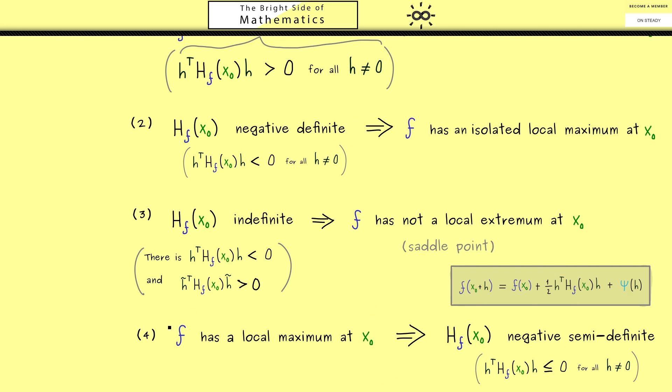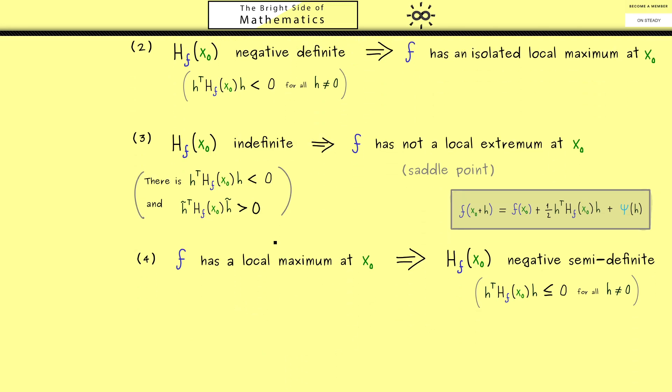And now the last implication here is the same thing for a local minimum. And there we will get a Hessian matrix that is positive semi-definite. So it has the same meaning as before; we simply don't have the strict inequality here. So it's positive and 0 is also allowed. And with that we have it. These are the nice relations we have between local extrema and the Hessian matrix of the function.